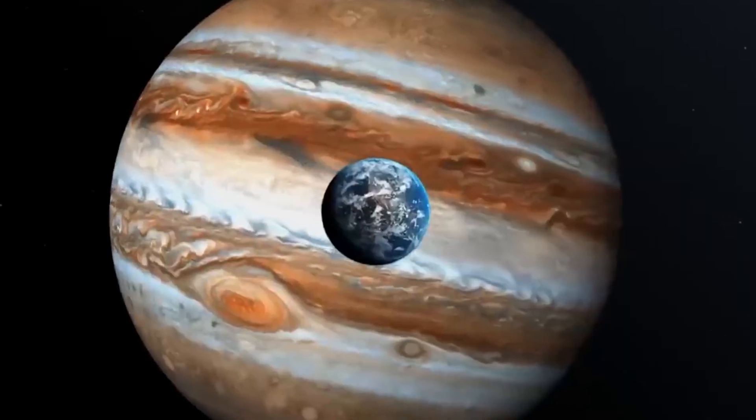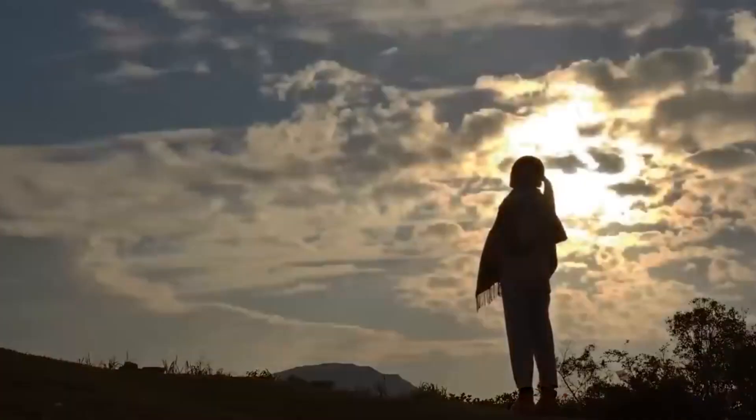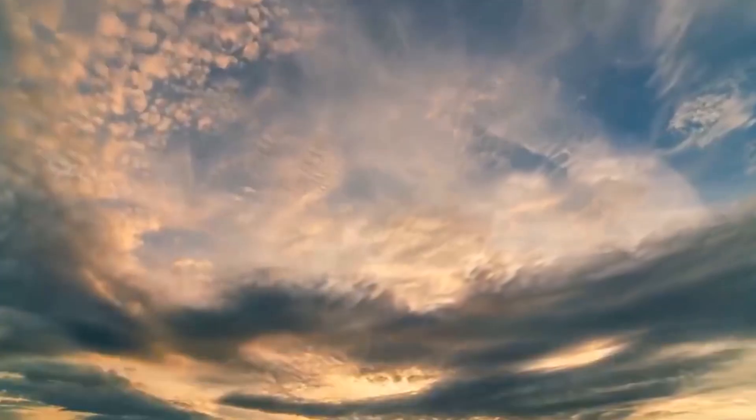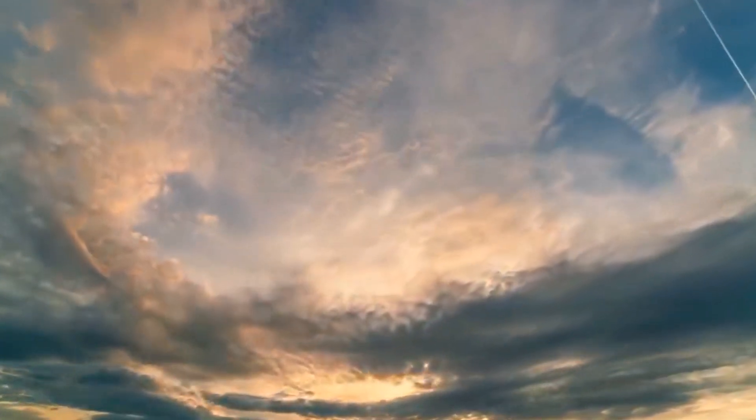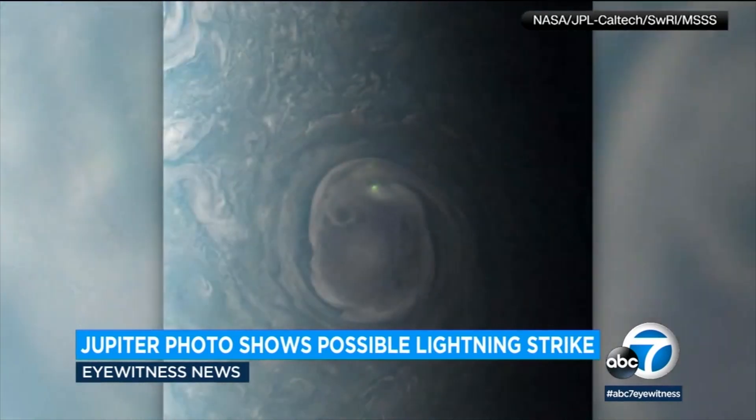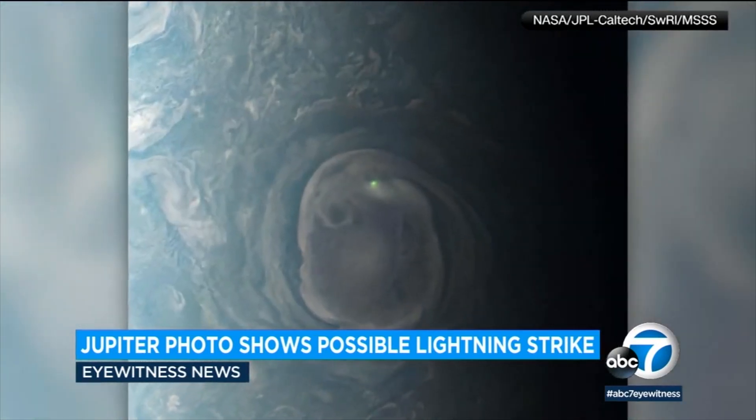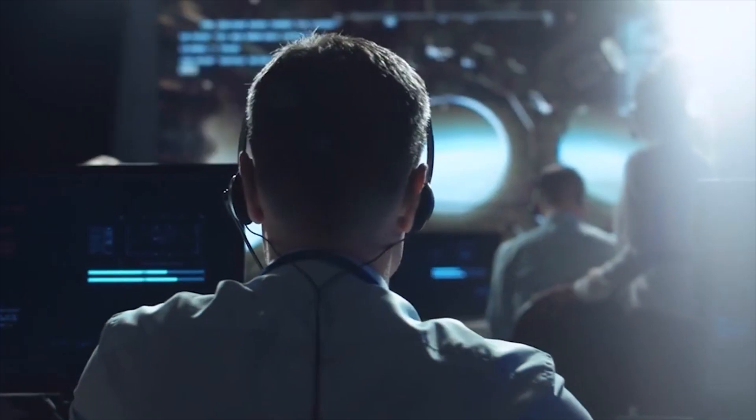Contrary to Earth, where lightning strikes often occur at the equator and come from clouds consisting of water and ammonia, green flashes on Jupiter typically strike close to the planet's poles.